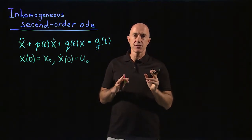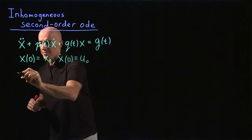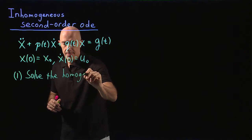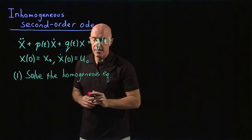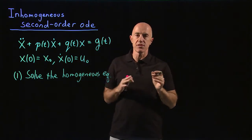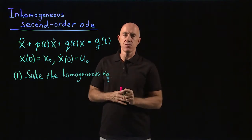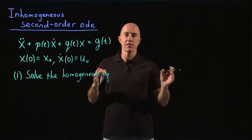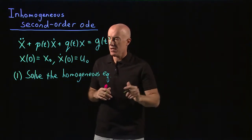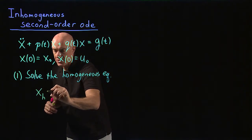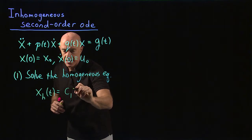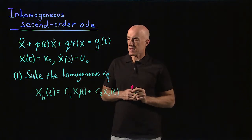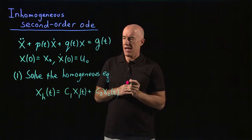The first step is to solve the homogeneous equation — that means the equation where g of t equals zero. Here we find the general solution to the homogeneous equation. Remember that the general solution has two functions with non-zero Wronskian, so you can satisfy the initial conditions, and they're multiplied by constants. So the homogeneous solution will look like a constant times x1 of t plus another constant times x2 of t. It's very important that the homogeneous solution has two free constants.